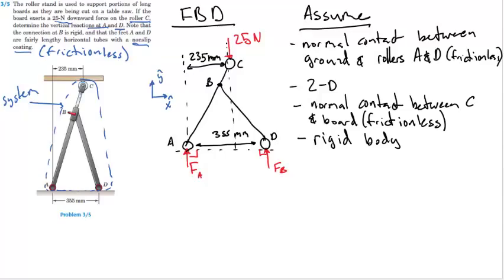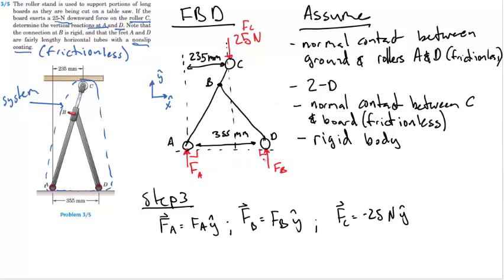In the free body diagram I have drawn the system with external forces at A, C, and D, along with axes and relevant dimensions. The assumptions made are: normal contact between the ground and the roller at A and D is frictionless; this is a 2D planar problem; normal contact between C and the board is frictionless; and this is a rigid body analysis. I have now converted the problem into a system we can analyze. The next step is to write all the force vectors in the free body diagram as vector equations. With all external forces written out, we are ready to solve using equilibrium analysis.